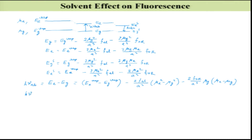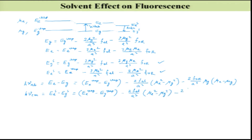hν_emission = Ees − Egs = Ee_vapor − Eg_vapor − (2·fel/a³)·(2μe² − μg²) − (2·for/a³)·μe·(μe − μg). Now I can take hν_absorption minus hν_emission and see what happens.